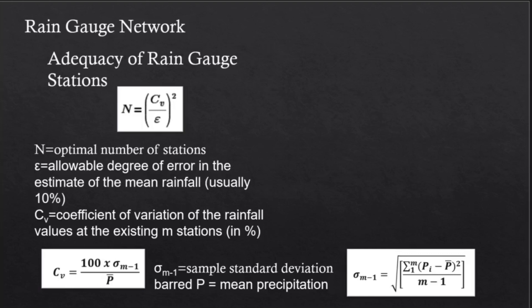Now for the optimal number of stations, we have this formula: N is equal to CV over epsilon, quantity squared. N here is the optimal number of stations, and epsilon is the allowable degree of error in the estimate of the mean rainfall. This is usually 10%, however if a different allowable degree is given, you will use that value. CV is the coefficient of variation of the rainfall values at the existing M stations, where M is the number of existing rain gauge stations.